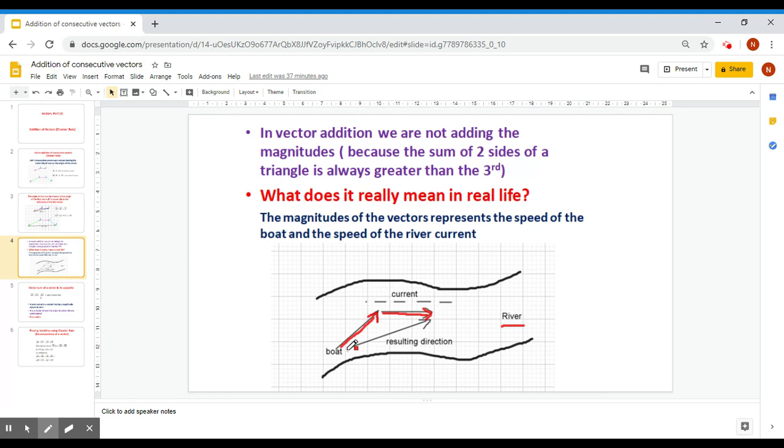Then the resulting direction of the boat affected by the current will be this one, which is an application of Chasles' Rule.